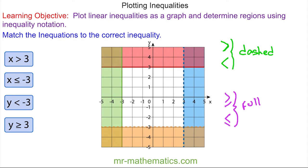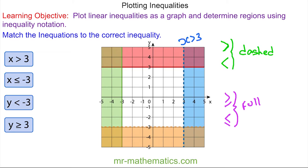So we have the inequality x is greater than 3. At this point here x is equal to 3, and anywhere along this line the y values will change but the x value will always be 3. As we go to the right you can see in this blue section we have when x is 4 and when x is 5. So as we go to the right the inequality is x is greater than 3 — greater than because it is a dashed line. So this inequality matches to this region.